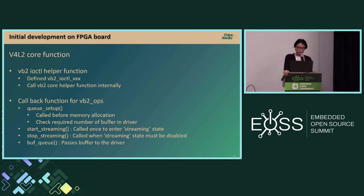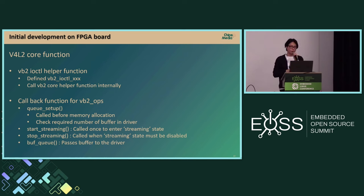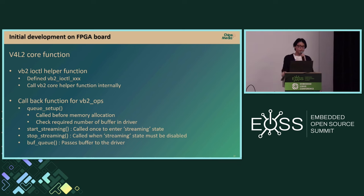This is the VB2 core helper function, named with the VB2_M2M_IOCTL prefix, which also calls internal V4L2 core helpers. It has specific callbacks: queue_setup, called before memory allocation where the driver reports the required number of buffers to the host; start_streaming, called once when entering streaming state; stop_streaming, called when streaming must be disabled; and buf_queue, called when a buffer is queued from the host.